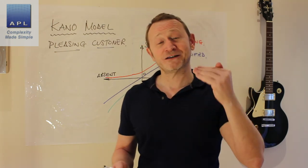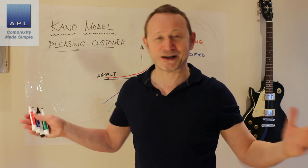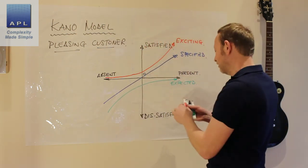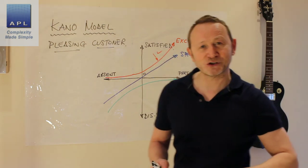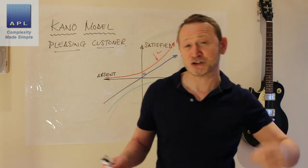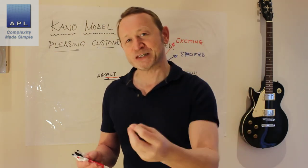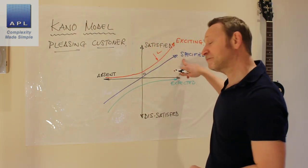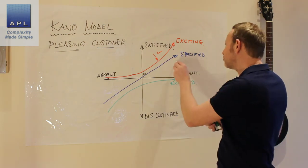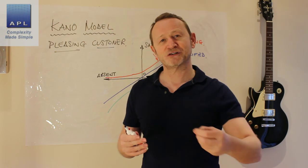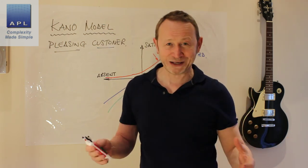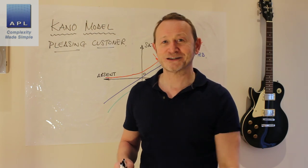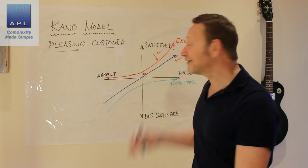So you have to be really careful and constantly work on exciting quality — doing something none of your competition is doing, something nobody's thought of. Give your customers exciting quality and you will blow the competition out of the water. For most of you, what you're trying to do is deliver specified quality really, really well, and there's nothing wrong with that. We can't all be Apple dealing with new technology all the time. But if you can find exciting quality for your customers, that is where you can make piles and piles of money. And that is the Kano Model.